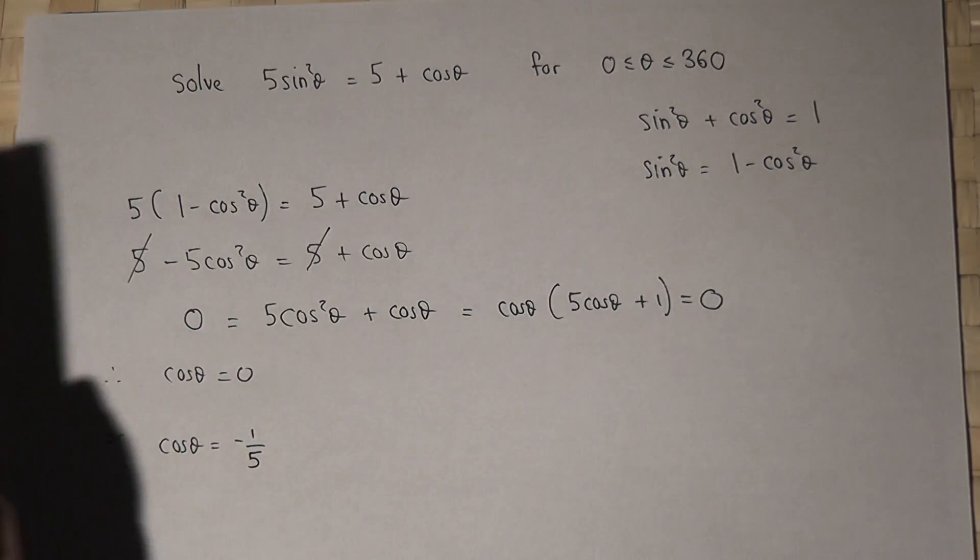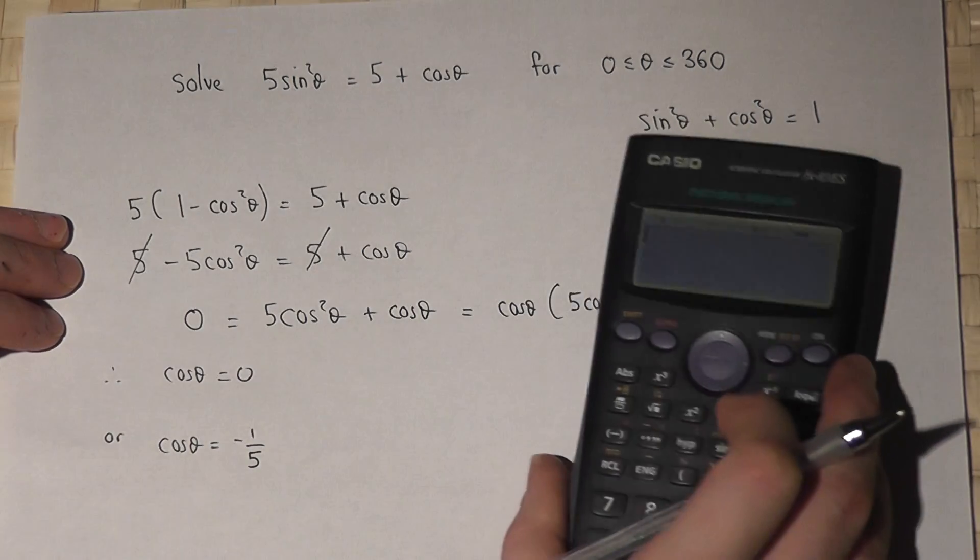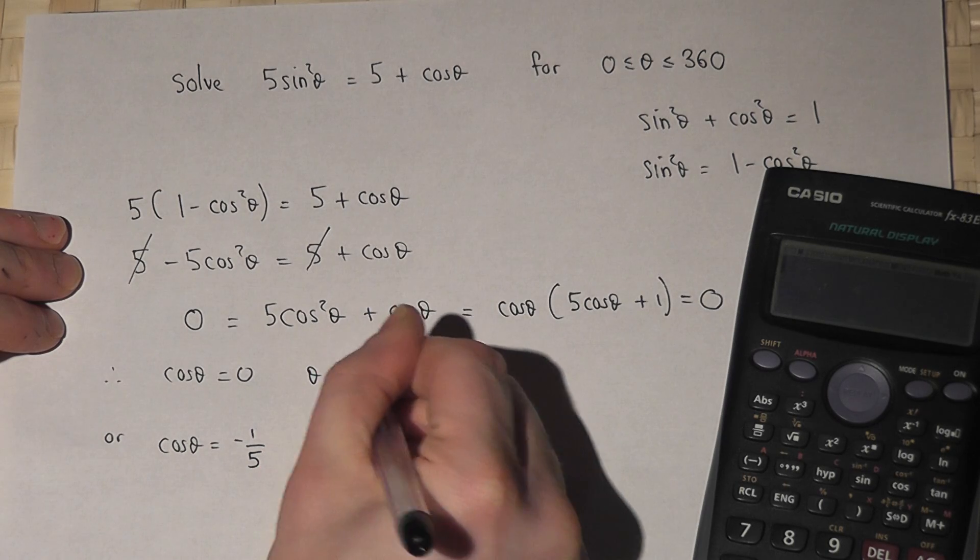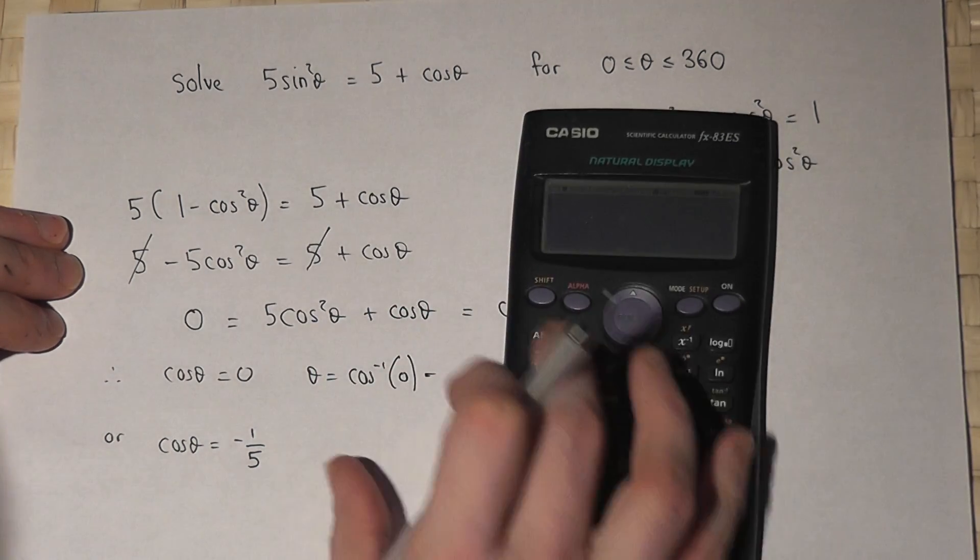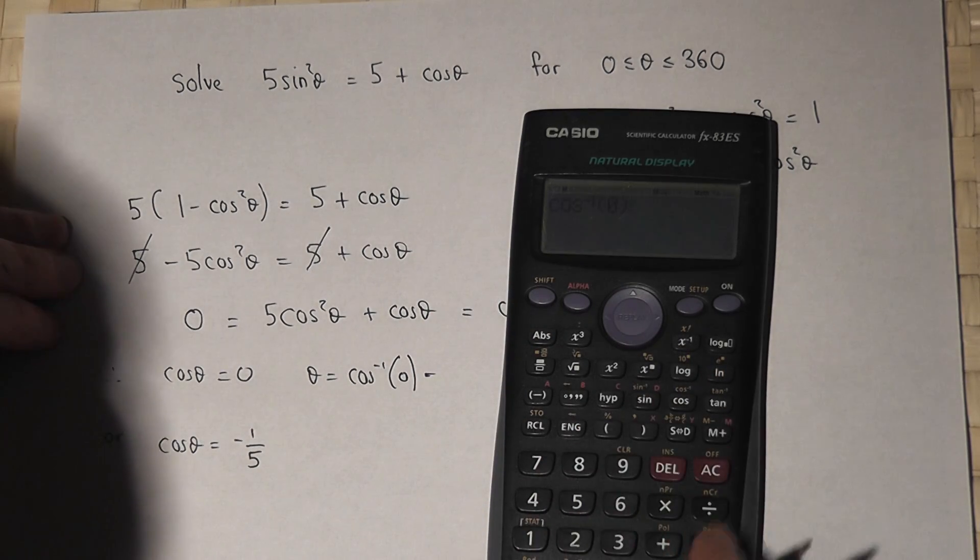So to find theta, we have to use our calculator and the inverse cosine function. So the first solution is theta equals inverse cosine of 0, which if you're not sure about, you press shift cos 0 and the answer will be 90.